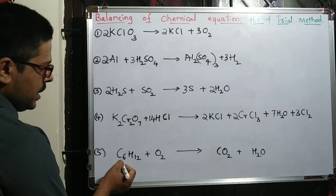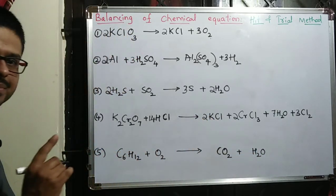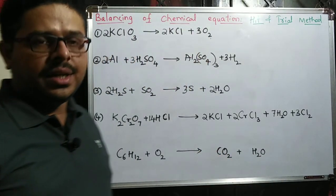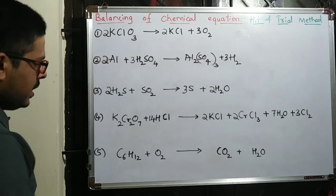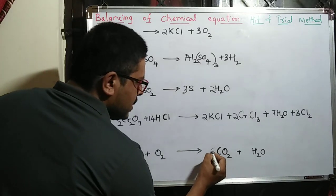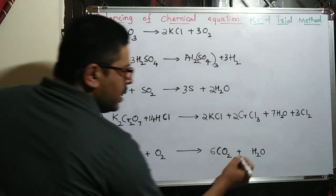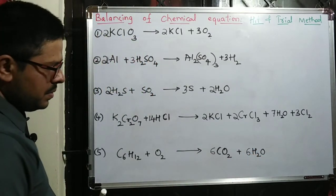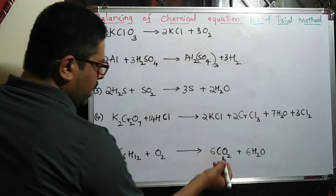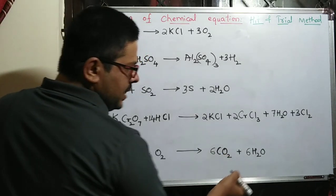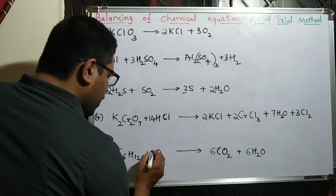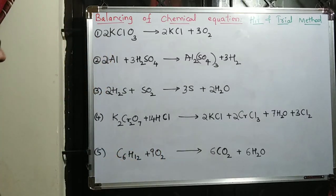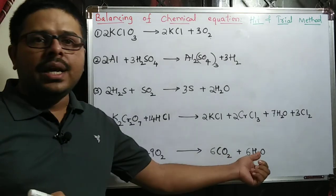Fifth example: C6H12 plus O2 gives CO2 plus H2O. C6 is there, so write 6 before CO2. C6 is there so 6 carbon balanced. Now hydrogen: 12 hydrogen, so write 6 before H2O. Now calculate oxygen: 6 × 2 is 12 plus 6 is 18 oxygen. Hence I want 9 O2 on the left. Like this you can balance this reaction.